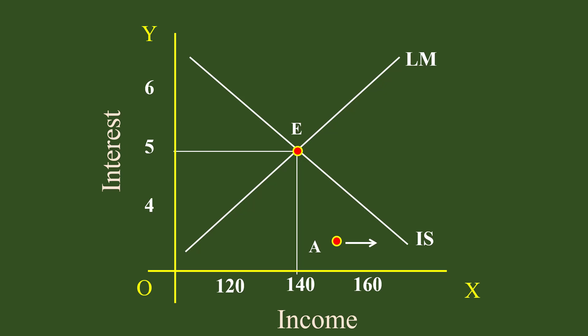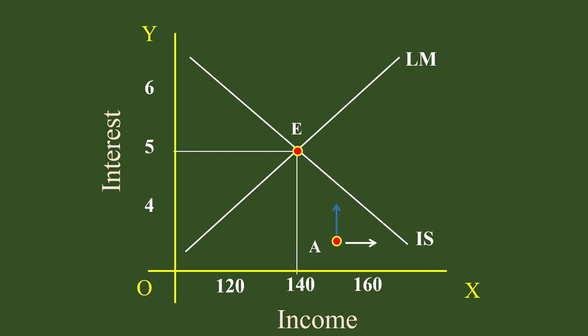Point A also lies to the right of the LM curve. In this area, demand for money is greater than supply of money, so the monetary forces pull point A vertically up towards the LM curve — the blue color arrow shows this. The two forces act in different directions. Depending on the relative strength of the forces, the market takes an in-between direction and reaches point B on the IS curve. The goods market is in equilibrium, but not the money market. The monetary forces then pull the point up towards the LM curve, shown by the light green arrow, and the point moves to G.